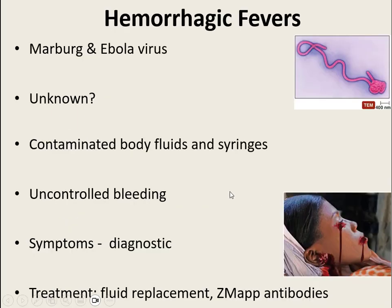The last group in the unsegmented negative-sense single-stranded RNA is the Filoviridae group. They're called Filoviridae because they are very long and skinny, looking filamentous. These are the Marburg and Ebola viruses. We're unsure of where these viruses originated. They are spread by contaminated bodily fluids and syringes, and can be spread through respiratory droplets with close contact.